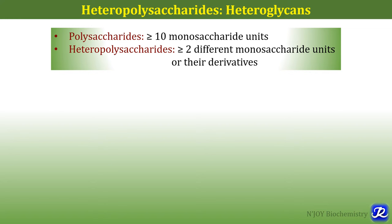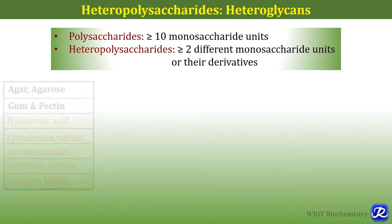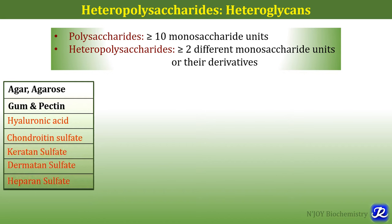Hetero means different units and glycan is related to carbohydrates. The various examples of heteropolysaccharides are agar, agarose, gum and pectin, hyaluronic acid, chondroitin sulfate, keratan sulfate, dermatan sulfate, and heparan sulfate.